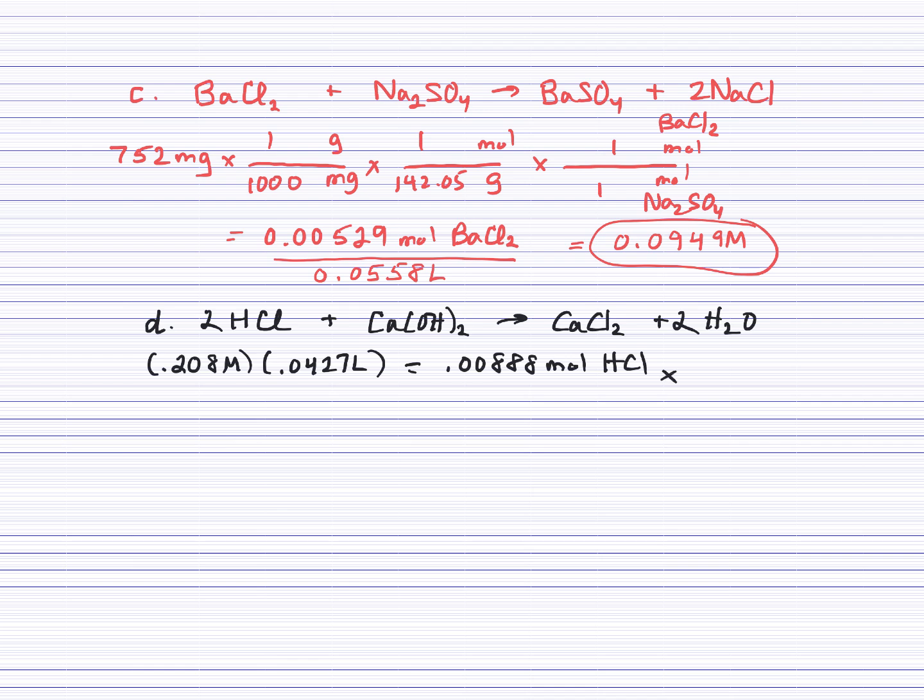Okay, we'll do a mole ratio. We'll go ahead and convert moles of HCl to moles of our calcium hydroxide. That ratio is 1 to 2. And then one more step. We'll go ahead and change moles to grams for our calcium hydroxide, which is 74.10. And we'll see that that will be 0.329 grams of our calcium hydroxide.